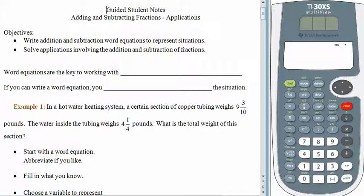We talked about algebra and writing word equations so that we truly understood what was happening with the problem. It's not enough to just see it in your head — when the situation gets too large to hold in your head, we don't have any process to fall back on. So even if it's really obvious, practice writing down the word equations and giving yourself some process, so that when the situation gets more involved, we have the tools to deal with it.